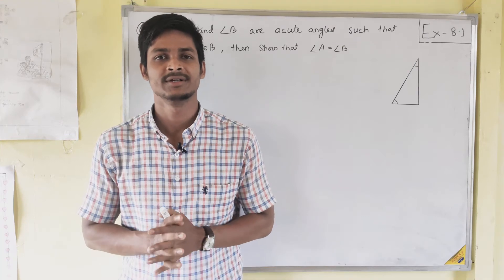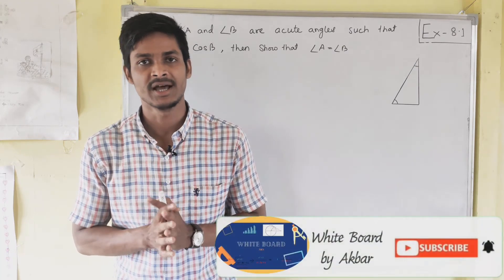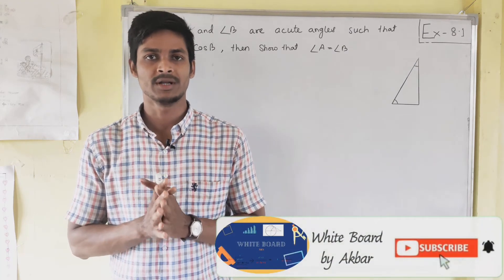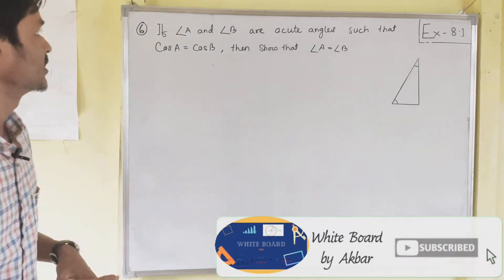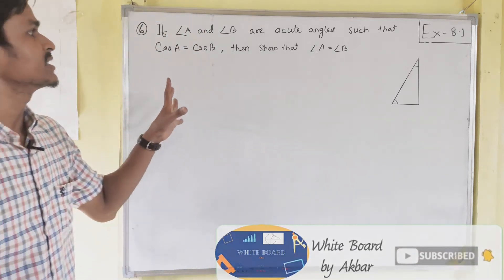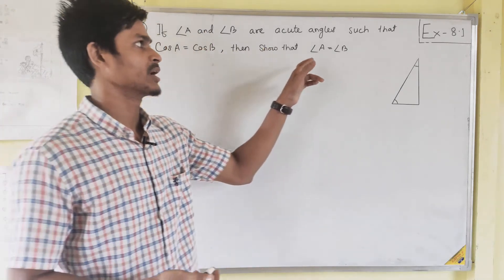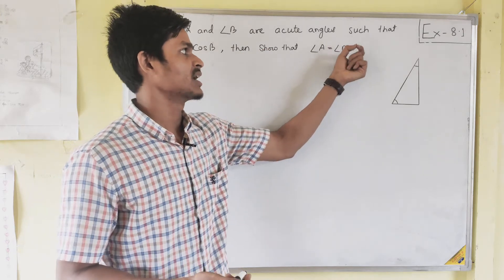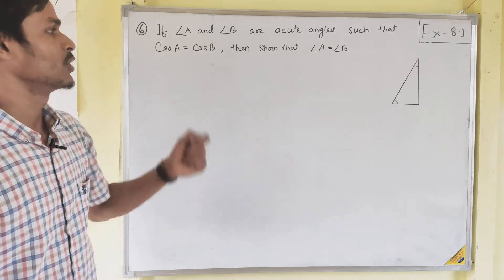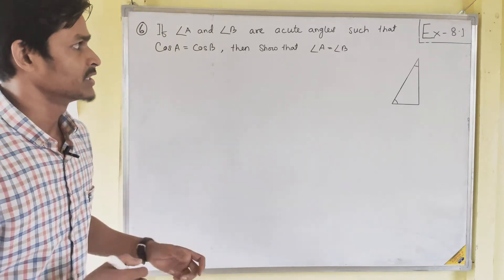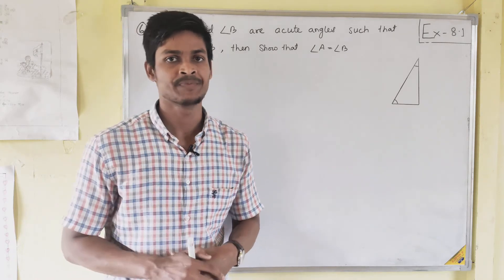Hello students, today I am going to start Exercise 8.1, Question Number 6. The question is: if angle A and angle B are acute angles such that cos A equals cos B, then show that angle A equals angle B.